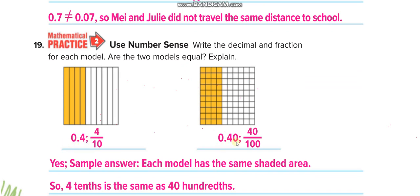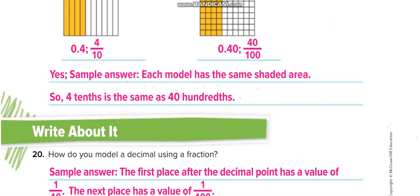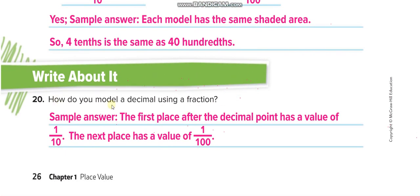0.4 and 0.40, they are the same. How? 0 ones, 4 tenths here, no hundredths. Similarly here, 0 hundreds, so 4 over 10 or 40 over 100. In the models, you can also check that the same area is shaded. How do you model a decimal using a fraction? The first place after the decimal point has a value of 1 over 10, the next place has a value of 1 over 100, and after that, 1 over 1000.